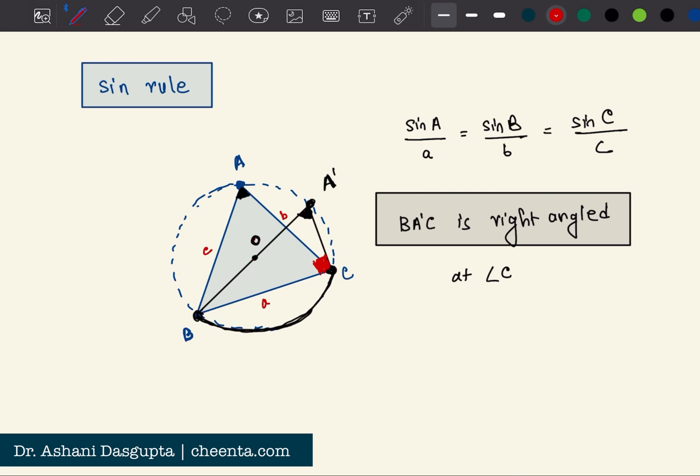Once you have that, then you can calculate sine of A prime which is equal to sine of A because angle A and A prime are same. So sine of A prime is opposite which is small a by hypotenuse which is the diameter 2R. Diameter is 2R where R is the radius of this circumcircle.